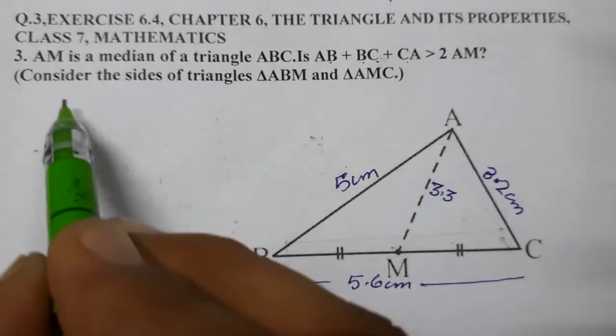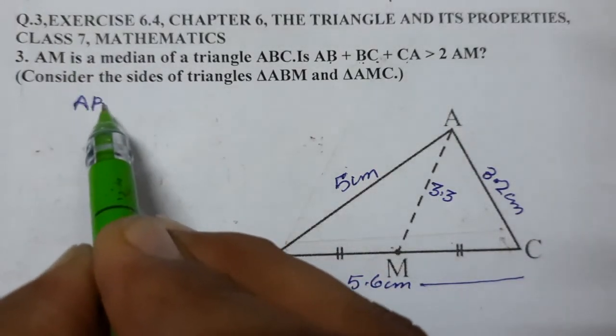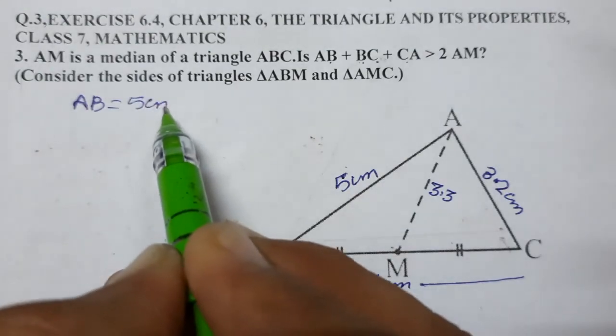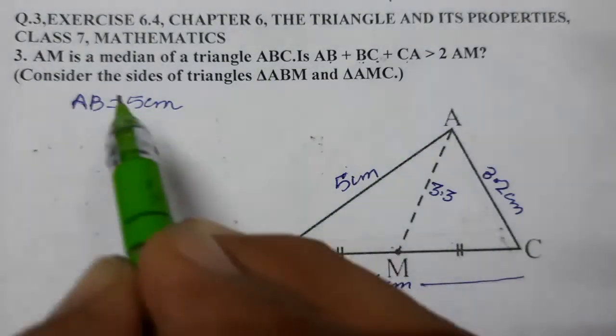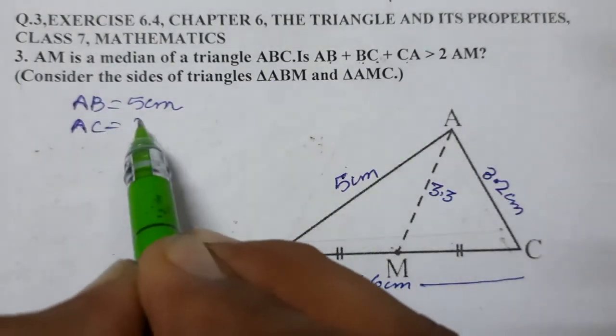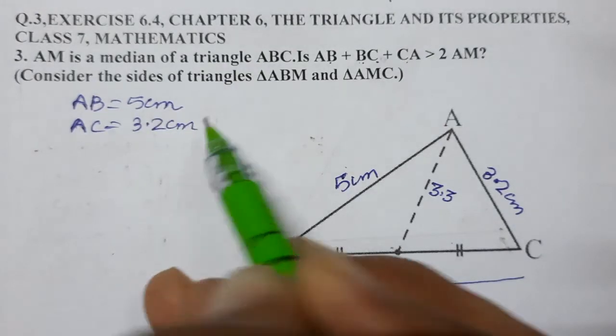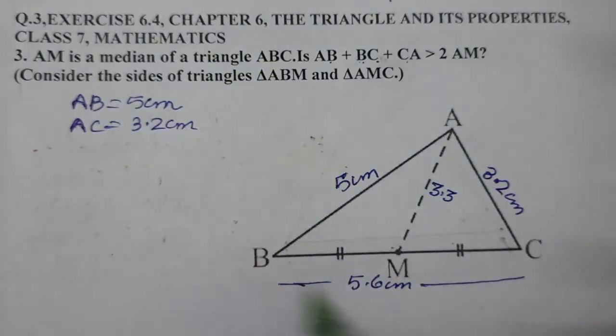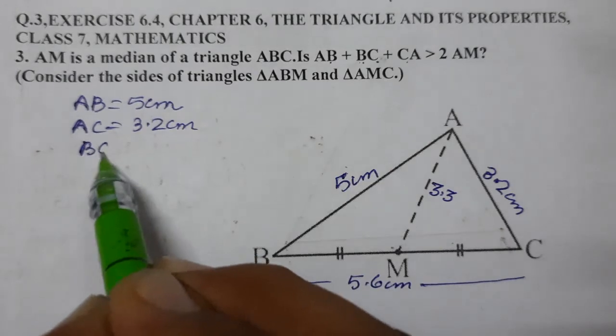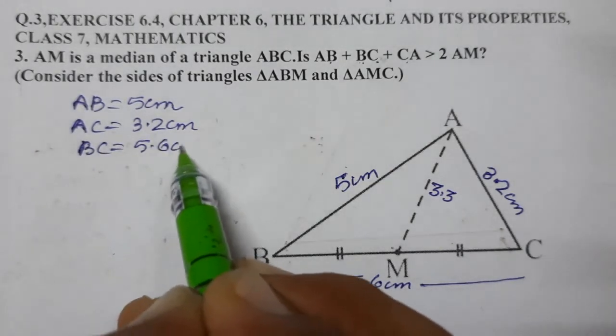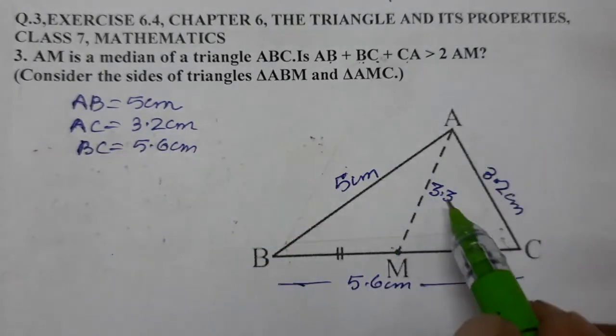I have measured all the sides. Sides are AB is 5 cm, AC is 3.2 cm, BC is 5.6 cm, and AM is 3.3 cm.